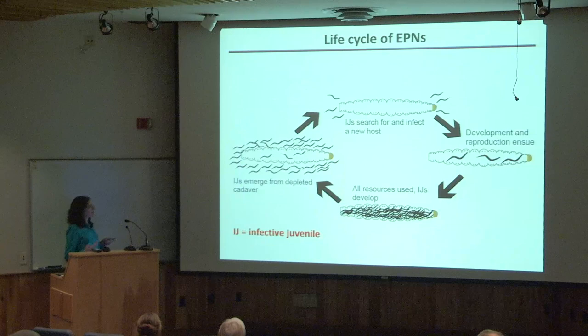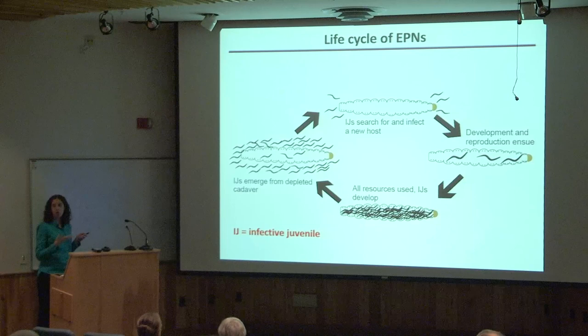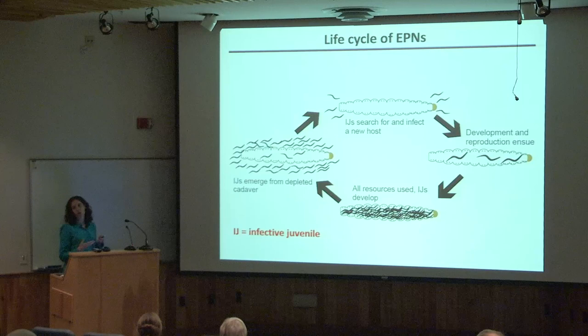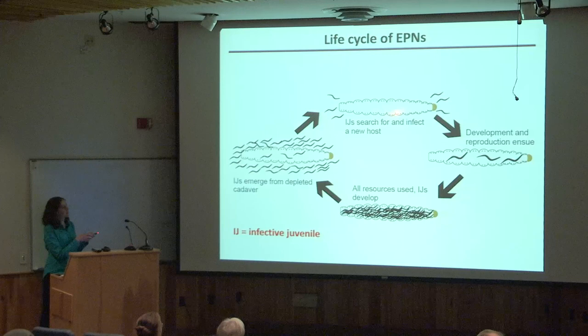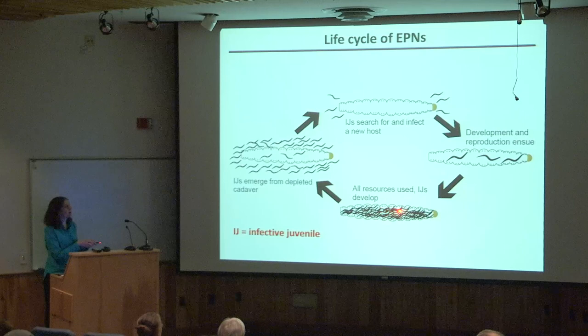These worms are only infective during a particular stage called the infective juvenile, or IJ stage. These IJs live in the soil where they search for hosts. When they find an insect larva, they can infect by entering through a natural body opening like the mouth, or by penetrating directly through the cuticle. They rapidly kill the insect host, then develop and reproduce inside the cadaver for two to three generations, feeding off cadaver tissue, until all resources are used up. New infective juveniles then form and emerge from the depleted cadaver to search for new hosts.